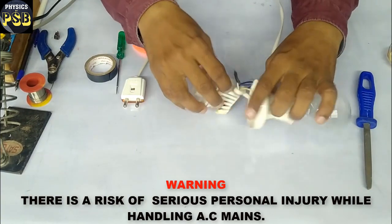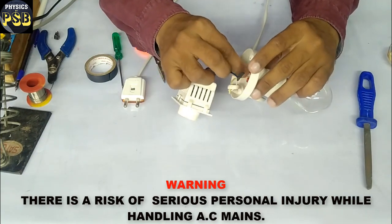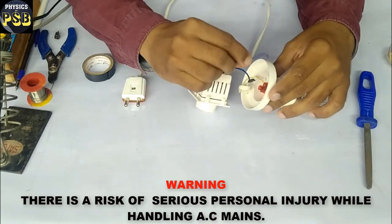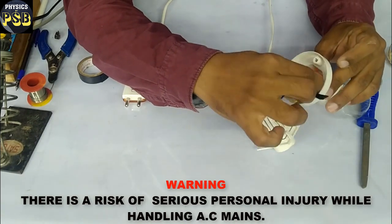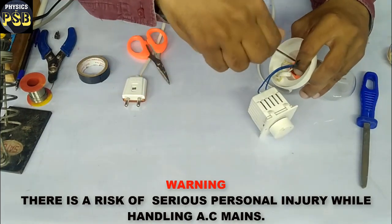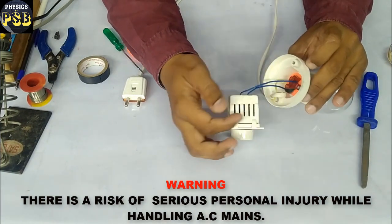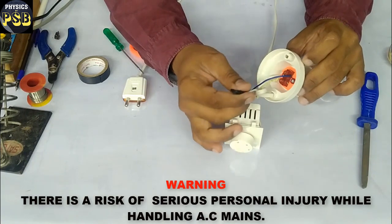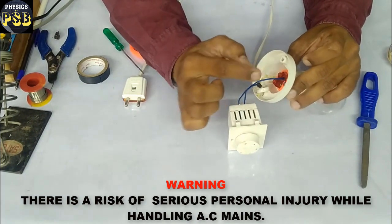After that, I will connect the second terminal. As you can see, the first terminal of the regulator is connected to this end and another is connected to the bulb socket.